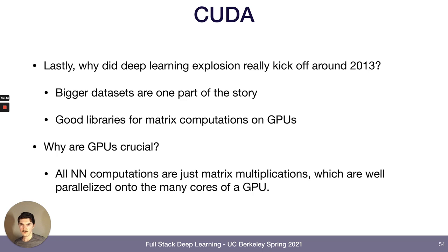And lastly, why exactly did things kick off in 2013? I mean, we had bigger datasets, but we also got good libraries for matrix computation on GPUs, particularly with NVIDIA CUDA. And that's using graphical processing units, which had until this point been only used for gaming.